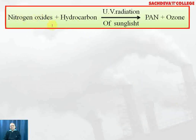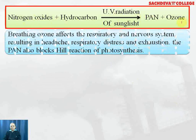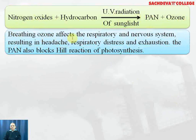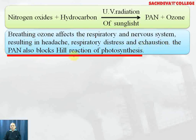Nitrogen oxides plus hydrocarbons, in the presence of ultraviolet radiation from sunlight, cause the formation of PAN plus ozone. Breathing ozone affects the respiratory and nervous system, resulting in headache, respiratory distress and exhaustion. PAN also blocks the Hill reaction, that is the light reaction of photosynthesis.